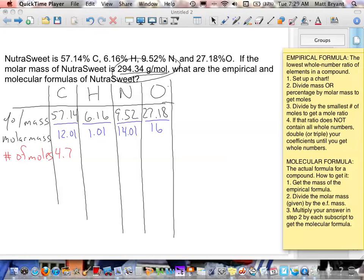For this one, we get 4.76. For the next one, we get 6.10 moles of hydrogen. We get 0.680 moles of nitrogen. And we get 1.70 moles of oxygen.